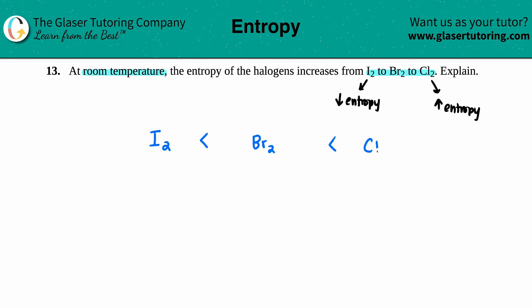There's two rules to explain trends in entropy. The first thing I see is they said I₂, Br₂, and Cl₂, so one trend we can use is our mass trend. The case here is that if you have more mass, generally speaking you should have more entropy.